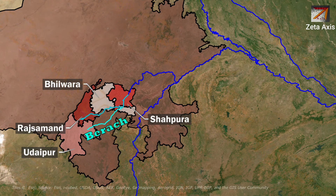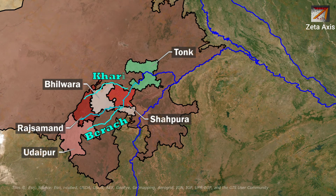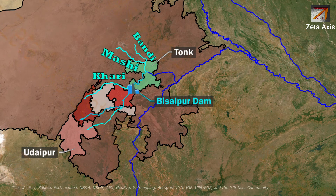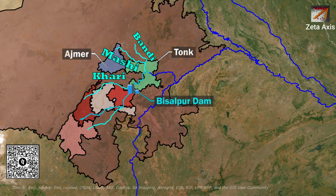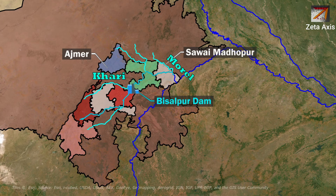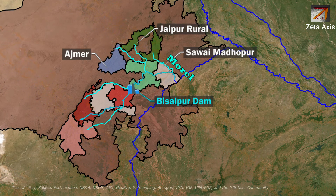The Banas river moves north, passes through Shahpura district, and enters Tonk district where the Khari river meets it. Just after the confluence of Khari and Banas, the Bisalpur Dam is built on the Banas river in Tonk district. The Banas river also meets the combined stream of the Masi river and Bandi river in Tonk. The Masi river originates in Ajmer and flows through Tonk. From Tonk, the Banas river enters Sawai Madhopur where it meets another tributary, the Morel river, which originates from Jaipur district. Finally, in Sawai Madhopur, the Banas merges with the Chambal river.